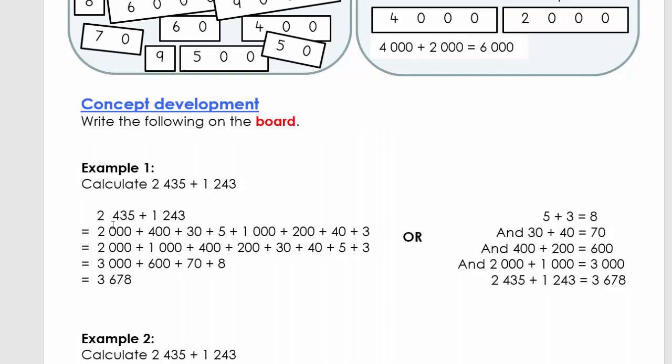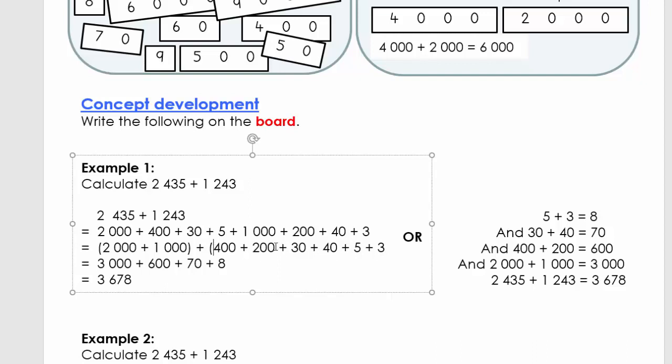We have 2435 plus 1243. We're going to write them down and take each number and write it in expanded notation. Here we have 2000 plus 400 plus 30 plus 5, and then 1000 plus 200 plus 40 plus 3. Now we're going to group the thousands, hundreds, tens, and units together. We can use brackets to make it easier. So we have the thousands together, the hundreds together, the tens, and the units.